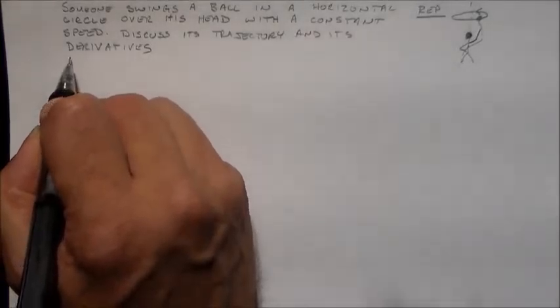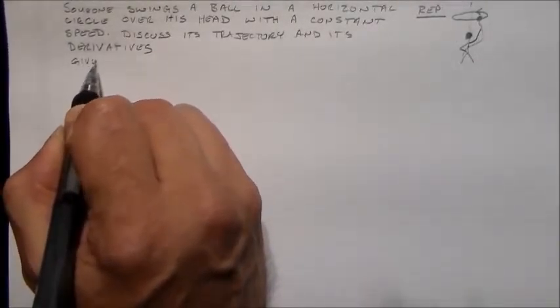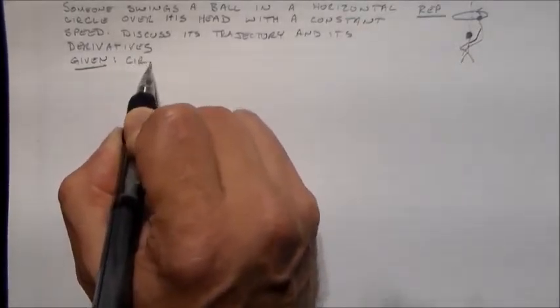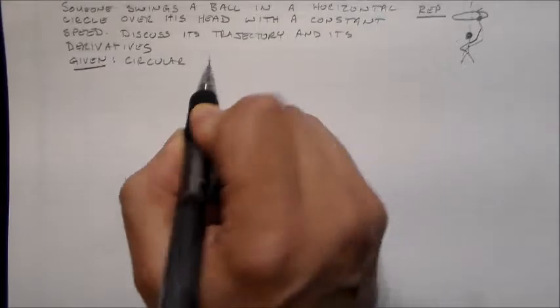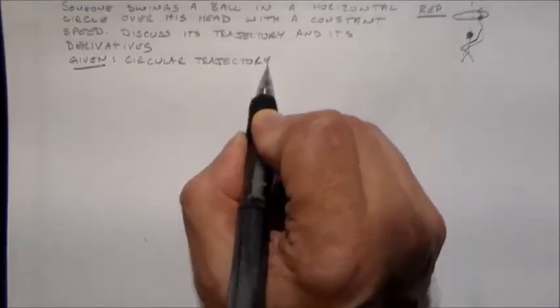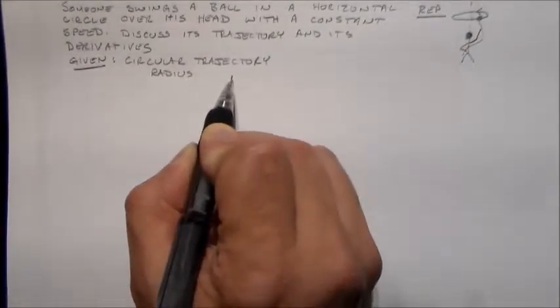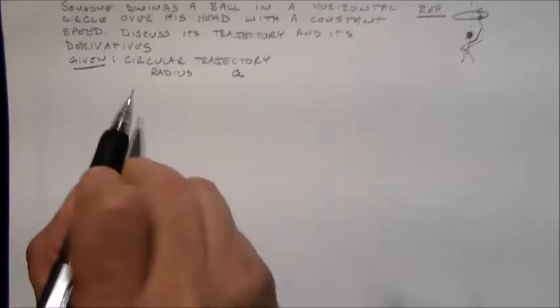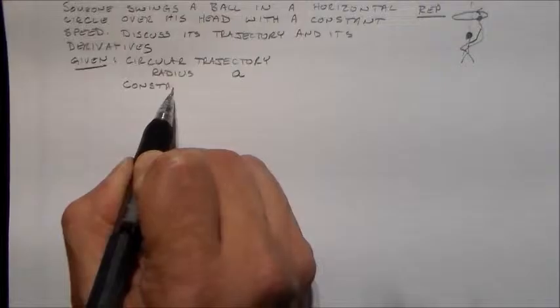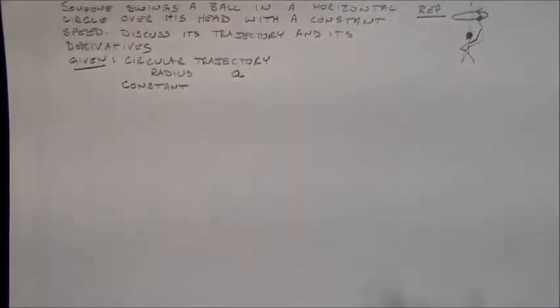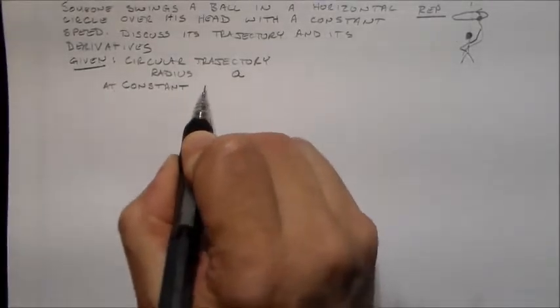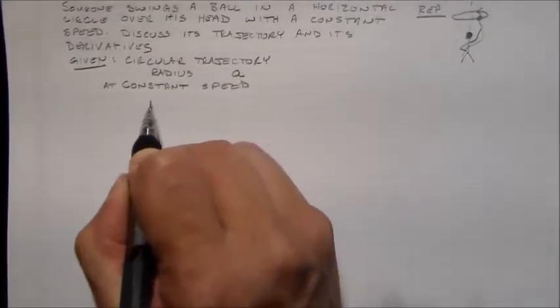So if I'm given all of this stuff, I'm given a circular trajectory, radius a, a is a common radius letter, and constant speed. So the ball's swinging around at a constant rate.